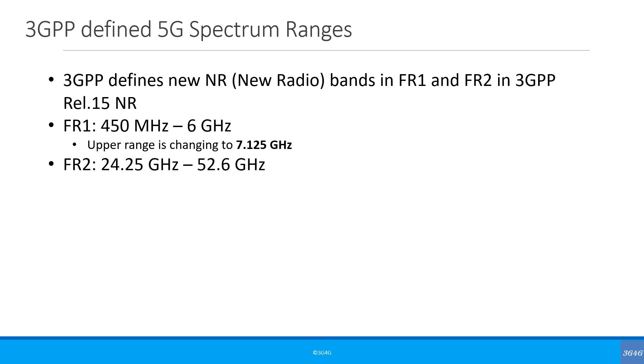While in theory we talk about frequencies from 0 to 100 GHz for 5G, in practice, 3GPP has defined two ranges of frequency called FR1 and FR2. FR1 covers frequency from 450 MHz to 6 GHz. This upper range of 6 GHz will be changing to 7.125 GHz to bring it in line with the frequency range being studied for the new Wi-Fi standards, beyond 802.11 AX or Wi-Fi 6. Frequency range FR2 covers frequencies from 24.25 GHz to 52.6 GHz.